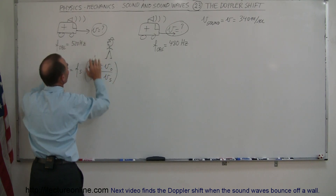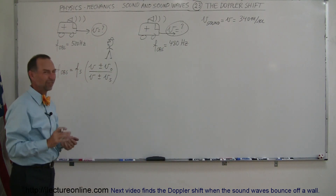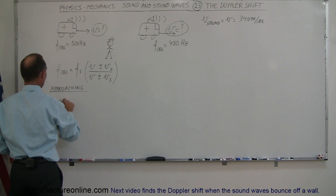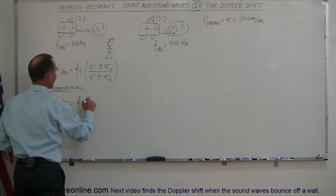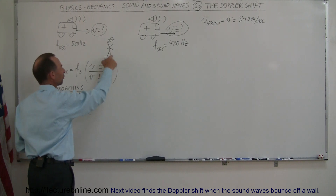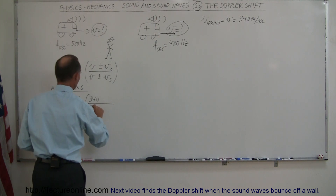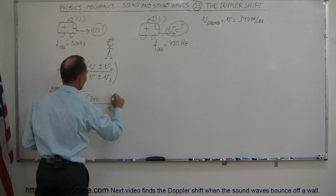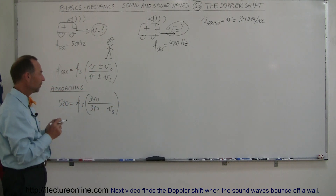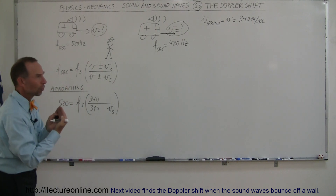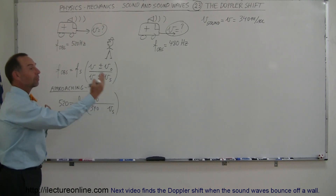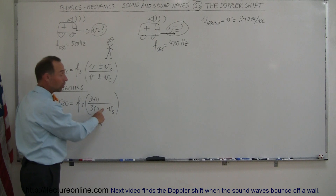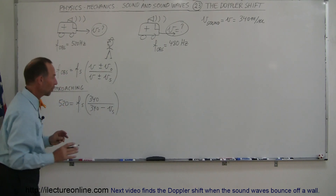The first application is when the van is approaching the observer. The frequency observed is 520 Hertz, equal to the frequency of the source — unknown — times 340, plus or minus the velocity of the observer (which is zero, since they're standing still), divided by 340 plus or minus the velocity of the source. Since the source is approaching, we expect a higher frequency, meaning we need a smaller denominator, so we use a minus sign.